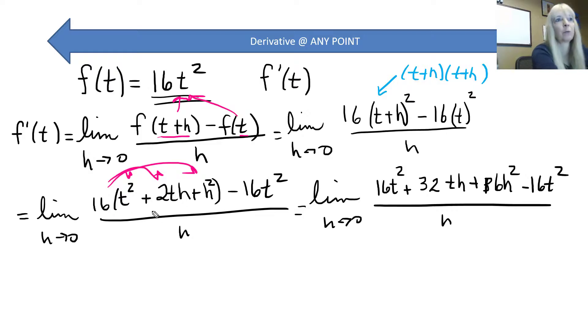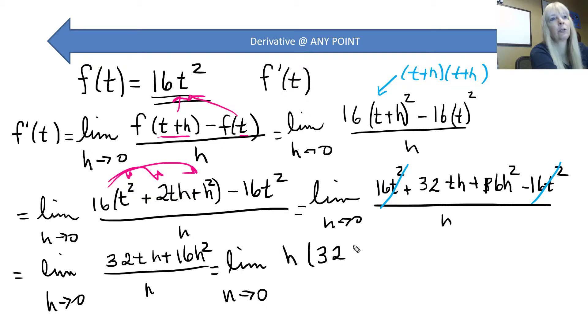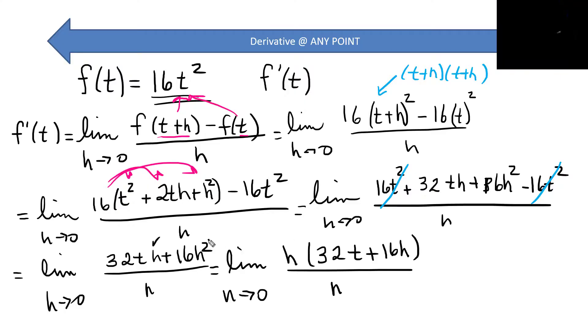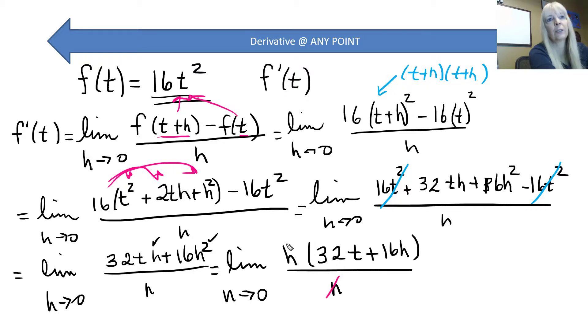So all I did was multiply each one of these terms by 16. So next limit as h goes to 0. This will always, always happen. Everything that does not have an h will cancel. It will always happen, no matter what. So then what I'm left with is 32th plus 16h squared all over h. Well from here, limit as h goes to 0. I could factor out an h on the top, which leaves me 32t plus 16h. So I factored out an h there, and so of course now those cancel.